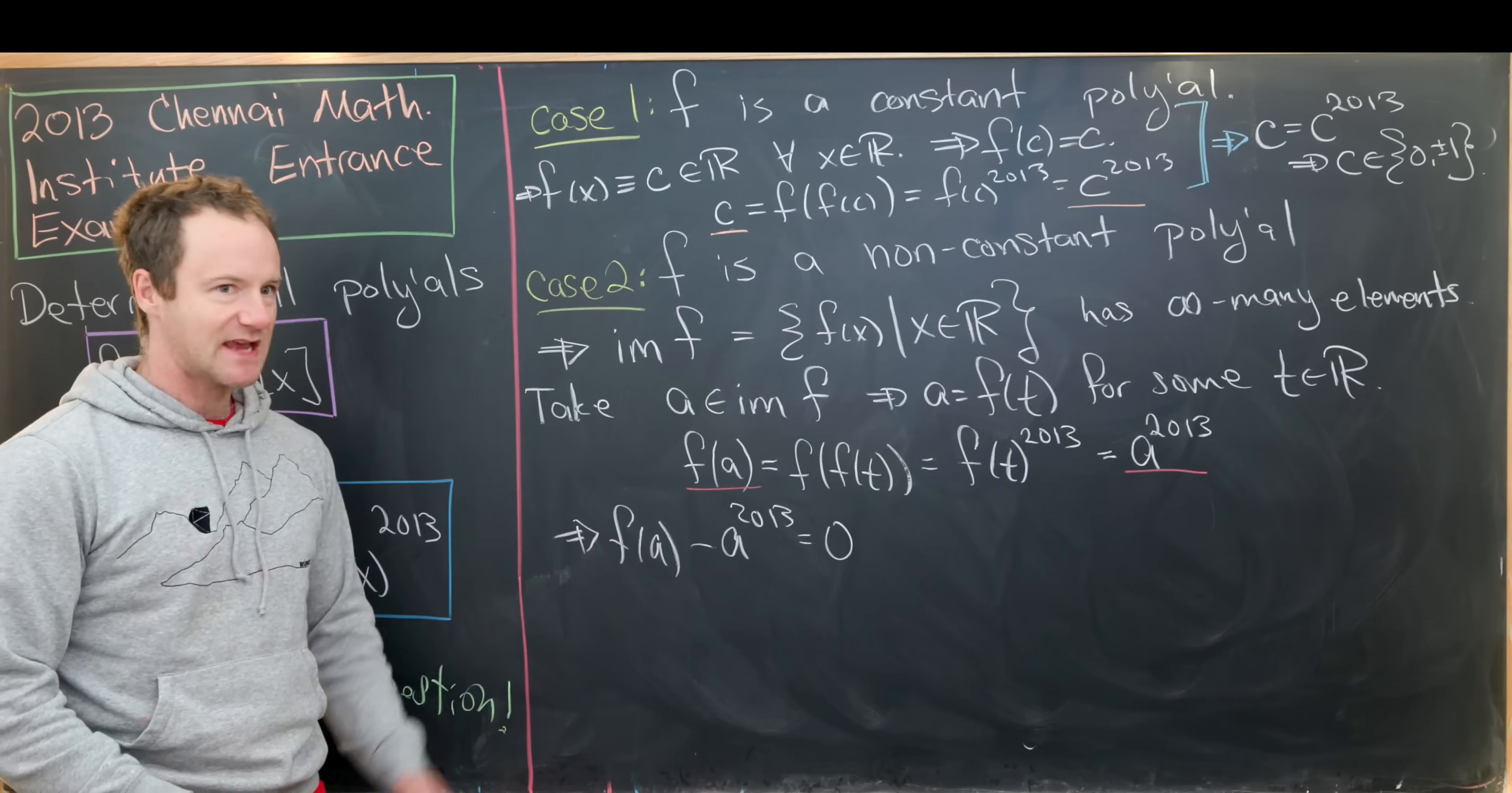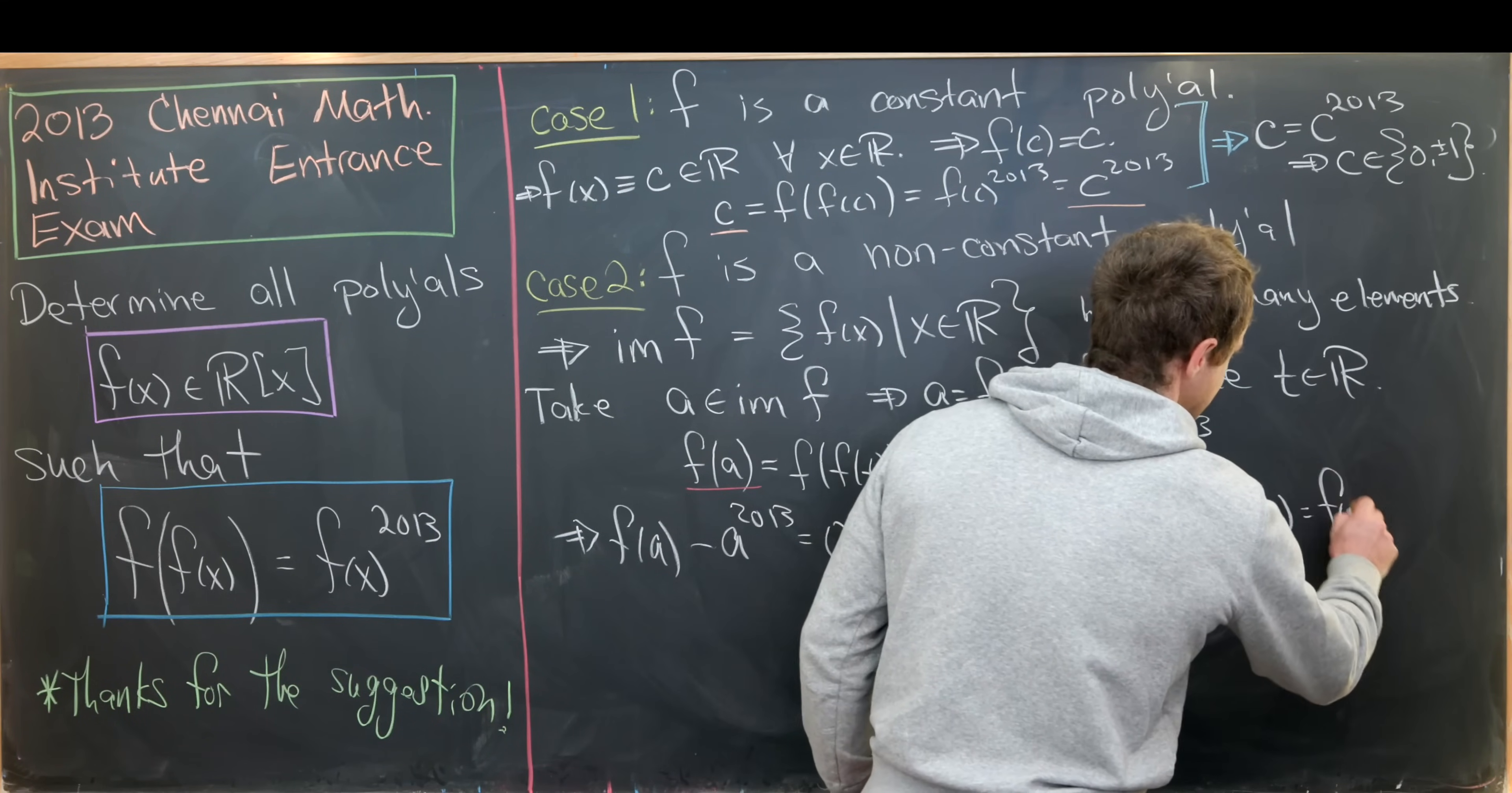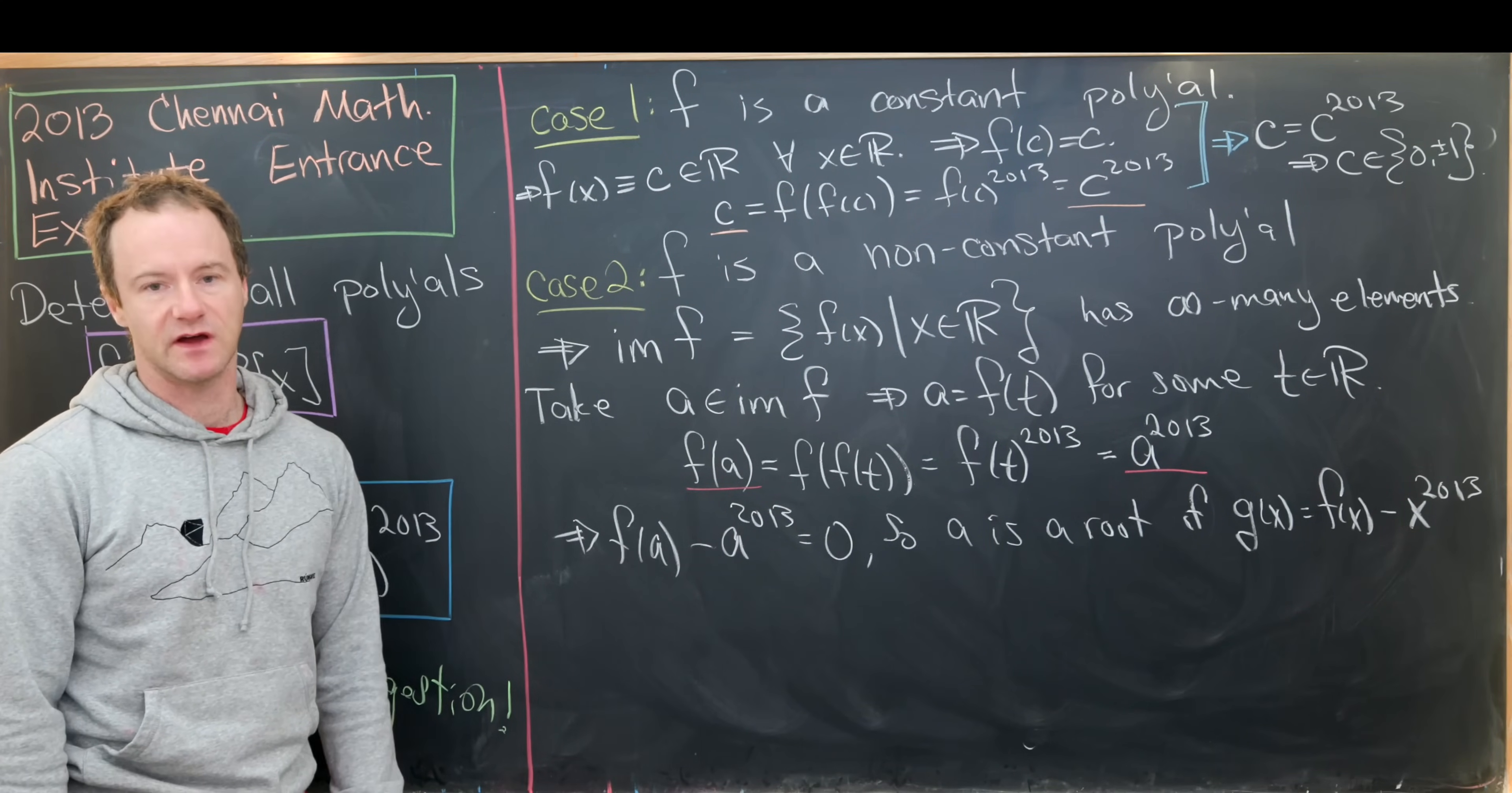But that makes a the root of a certain polynomial. Let's write that as follows: a is a root of a polynomial which I'll call g of x, which is equal to f of x minus x to the 2013. That's because if we compute g of a we clearly get zero from this construction that we've done.